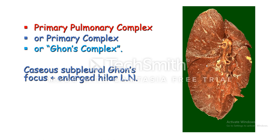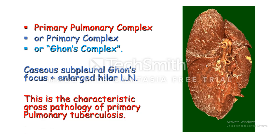So it is the caseous subpleural Ghon focus plus the enlarged hilar lymph node, and this is the characteristic gross pathology of primary pulmonary tuberculosis. The primary pulmonary complex consists of the caseous subpleural Ghon focus plus the enlarged hilar lymph node.